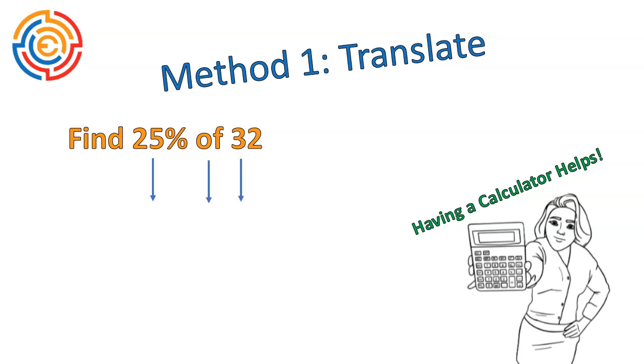So we'll translate the 25%, the of, and the 32. 25% written as a decimal is 0.25. Of means multiply, and 32 is 32. This gives us our math sentence. You plug that into a calculator, hit equals, and boom, you've got your answer. That's just about the easiest way to calculate the percent of a number.